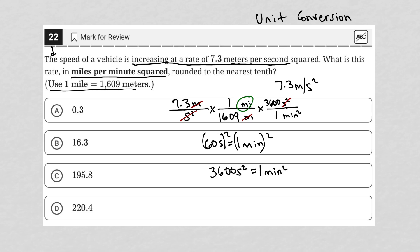So now all that's left is the math. Let's multiply the numerators: 7.3 times 3,600. Let me do that 7.3 times 3,600 in my calculator. I get 26,280.